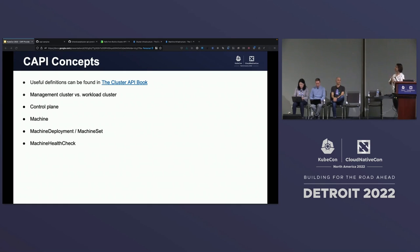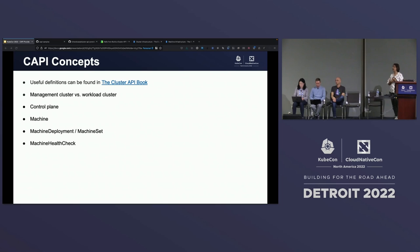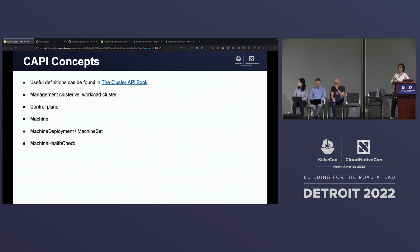Let's refresh our Cappy glossary. The Cappy Cluster API book has pretty extensive documentation on various concepts, experimental features, and lots of code snippet examples. What is a management cluster? It is a Kubernetes cluster that manages the lifecycle of workload clusters. A management cluster is also where you run your providers and custom resources like machine or machine sets would be stored. A workload cluster is where you run your workloads on.